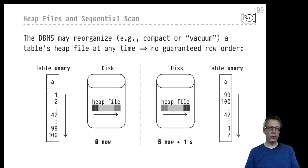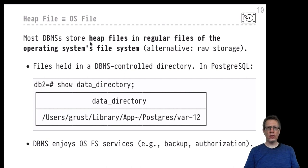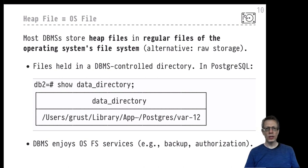Heap files are really regular files that the operating system stores in a particular file system location. There is nothing special about these heap files — we can use regular tools to inspect them, understand them, or even corrupt them. So let's use these operating system tools to peek inside these files and see what we can find.